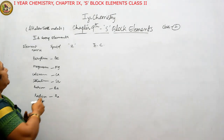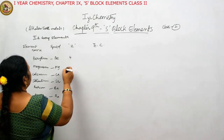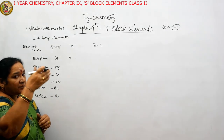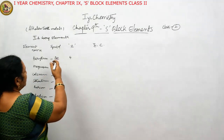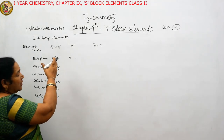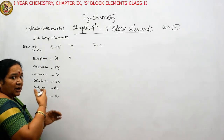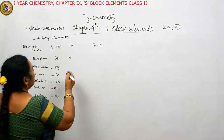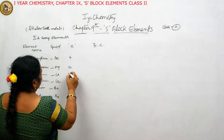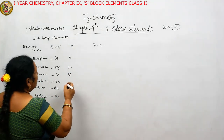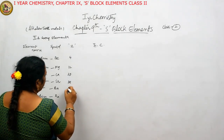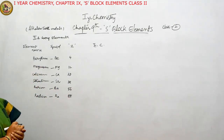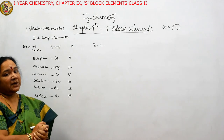Z means atomic number. Beryllium is 4, magnesium is 12, calcium is 20, strontium is 38, barium is 56, and radium is 88. We can derive these: 4 plus 8 is 12, 12 plus 8 is 20, 20 plus 18 is 38, 38 plus 18 is 56, 56 plus 32 is 88. So we can find their atomic numbers using these additions.